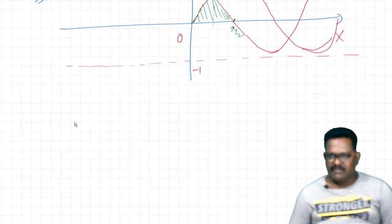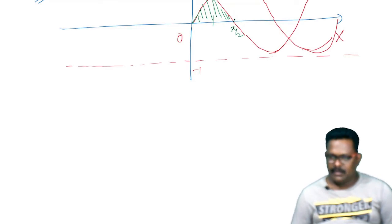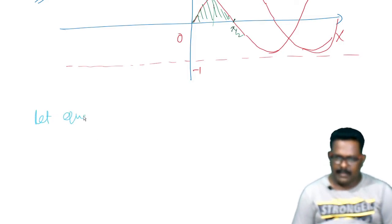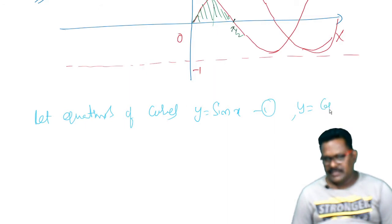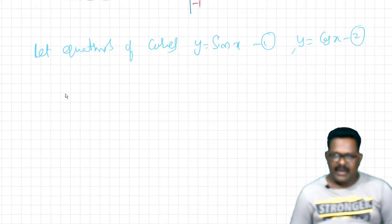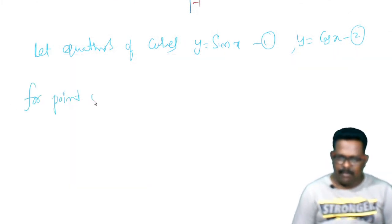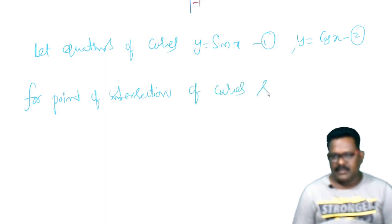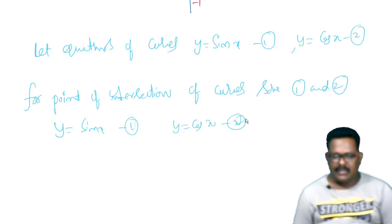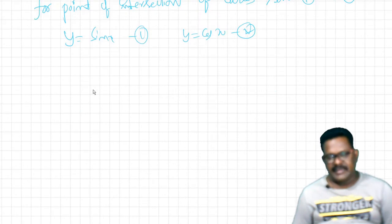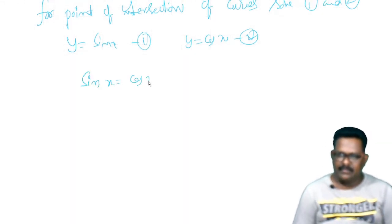Let the equations of the curves be: equation 1 — y is equal to sin x, and equation 2 — y is equal to cos x. For the point of intersection of the curves, solve equations 1 and 2: sin x is equal to cos x.